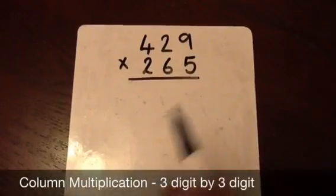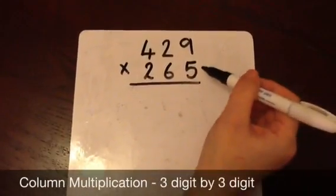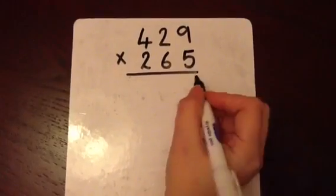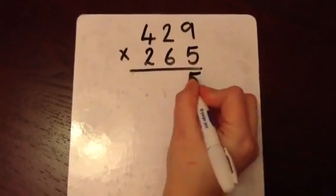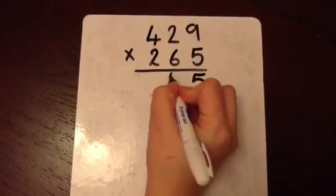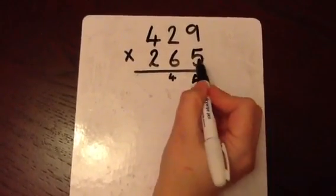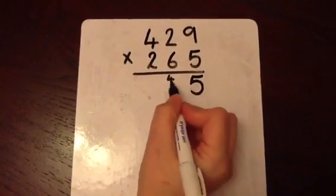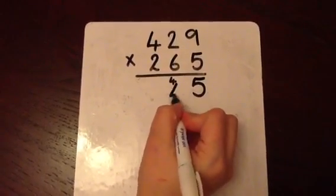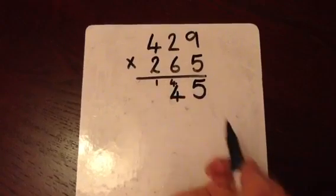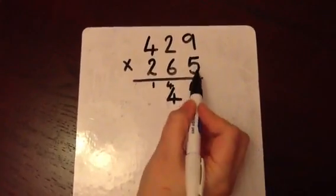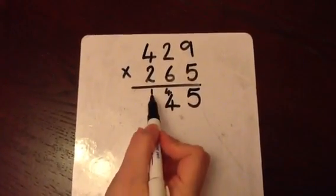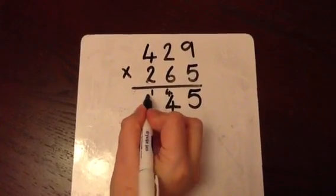As in the previous step, it is vital that all of the digits are kept in the same column. We're going to begin with the units. 5 multiplied by 9 is 45. The 5 goes in the units column and the 4 is carried over. 5 times 2 is 10 and the 4 makes 14, carrying that 1 across. 5 times 4 is 20 and the 1 makes 21.